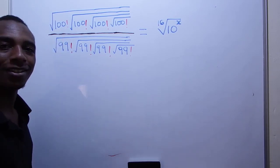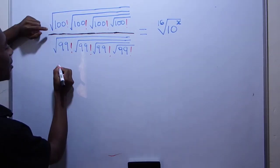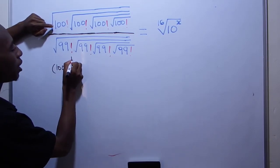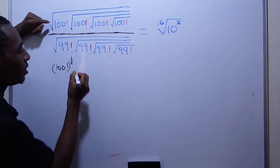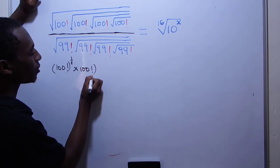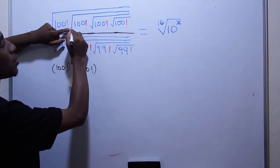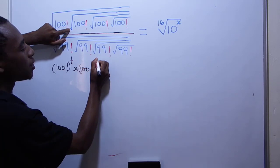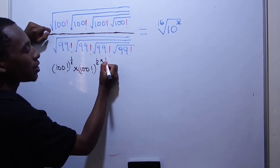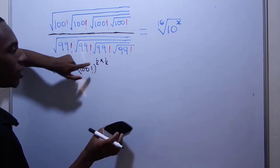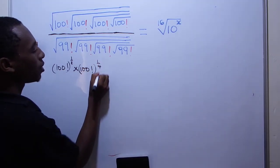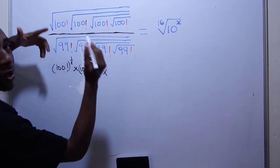I'm going to begin by writing these as powers or indices. So this is 100 factorial to the power 1 half — that's what the square root means. I come to this second one here, that's 100 factorial. The power here: we have this square root which represents 1 half, and we also have this outer square root which represents another 1 half. So 1 half times 1 half, that's a quarter. This is the power 1 over 4 because it has two square roots.